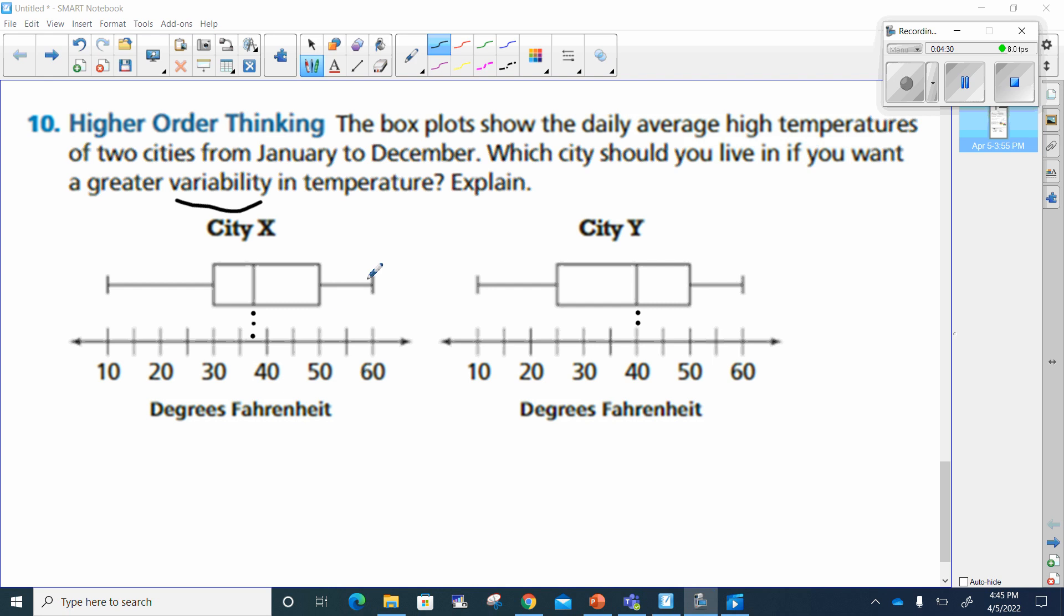So let's first look at the range. The range is always the biggest number minus the smallest. And that's going to make 60 minus 10. That gives us a range of 50. We check city Y. We see we also have 60 minus 10, which will make our range the same. Sorry, this should have been 50, not 5. Okay.